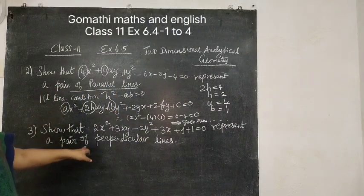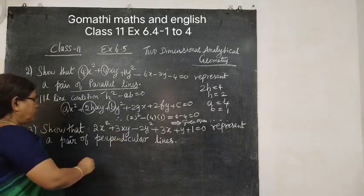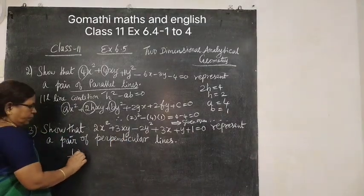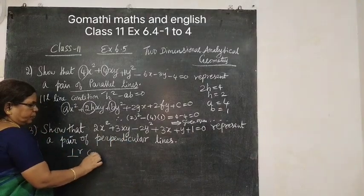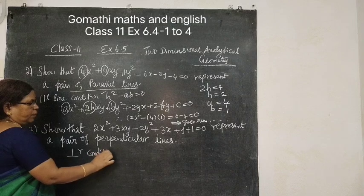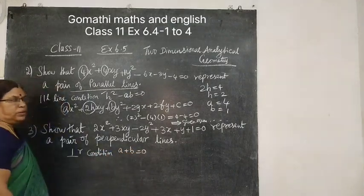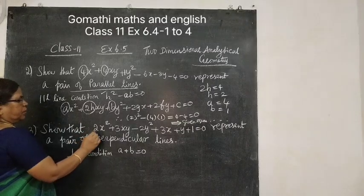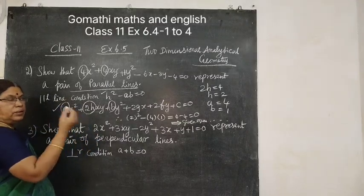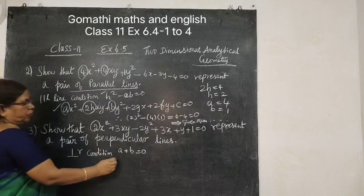Next to show that perpendicular. Perpendicular condition is A plus B equal to 0. What is A? Again, this equation, A equals 2.